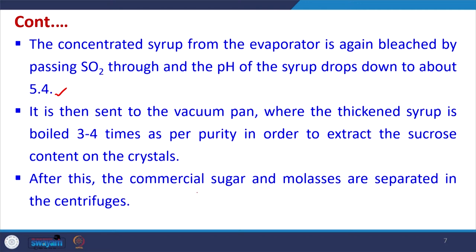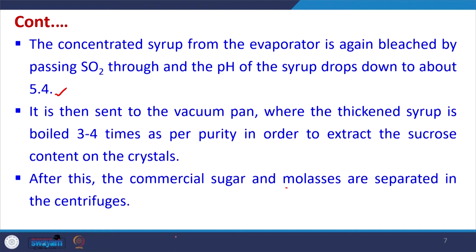After crystallization, commercial sugar and some molasses are separated in the centrifuges. These are the different steps followed in sugarcane processing. The sequence of steps in sugar production — both beet and cane — are very similar. Both involve reception, cleaning, extraction, juice clarification, evaporation, crystallization, centrifugation, drying, storing, and packaging. Beet and cane sugar manufacturing facilities are typically located adjacent to the source of raw materials, generally in rural areas, ensuring fresh raw material and lesser transportation time and cost.